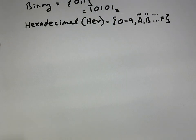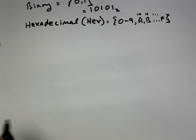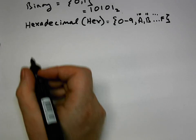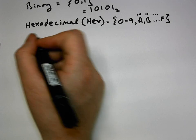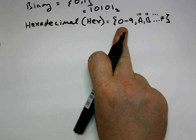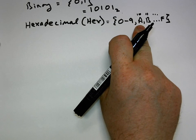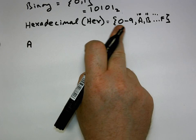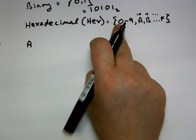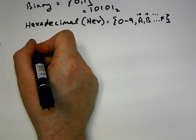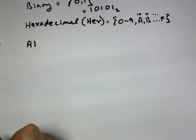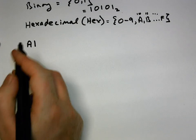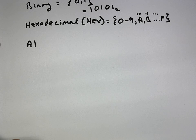So what we'll do is convert a hexadecimal number into a decimal number. We'll take any hexadecimal number at all — we just need elements from the hex alphabet. So we'll take an A and one of the first ten digits, we'll take a one. So we have the hexadecimal number A1, and we need to convert that into a decimal.